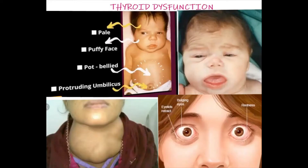Thyroid dysfunction means the thyroid gland is not functioning properly — it may secrete excess or less amount of hormones. There are two types of dysfunction: hypothyroidism, meaning decreased secretion, and hyperthyroidism, meaning excess secretion.